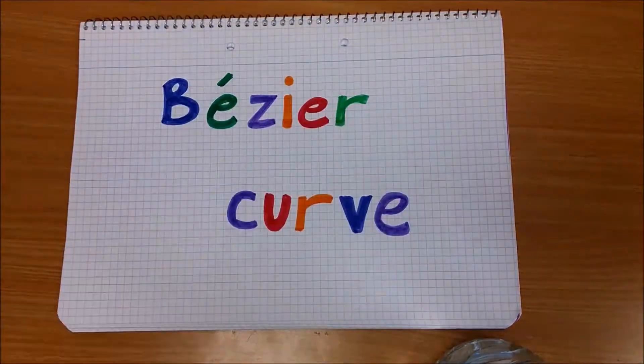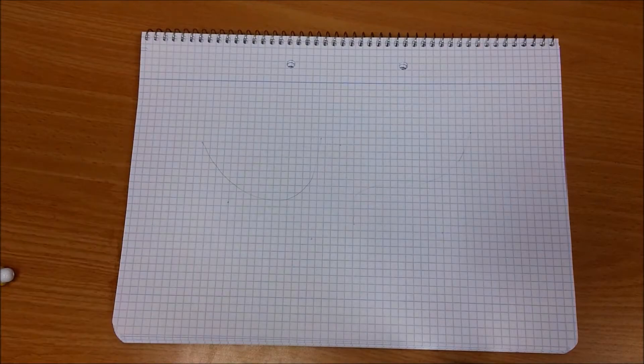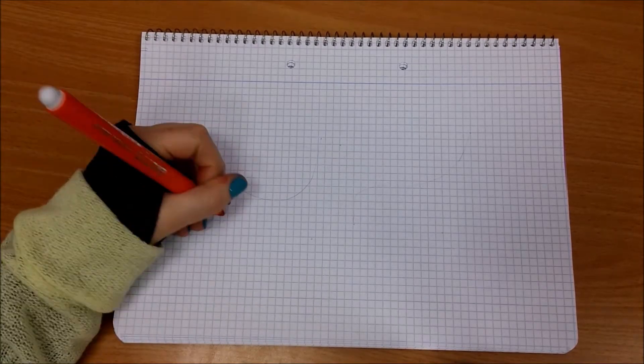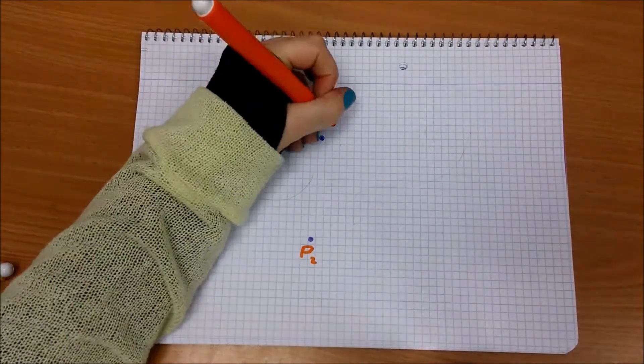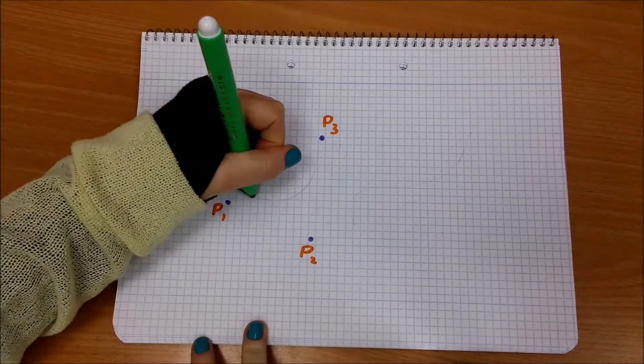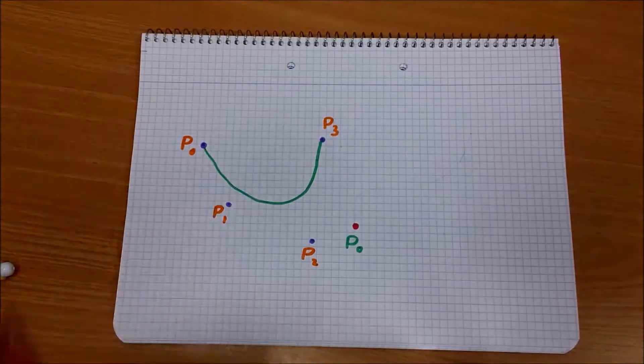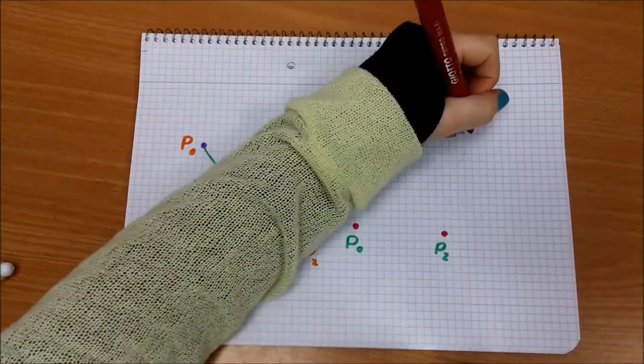Bezier curve. Let's begin with some examples and see what Bezier curves look like. These are Bezier curves with 4 control points. These are cubic curves.